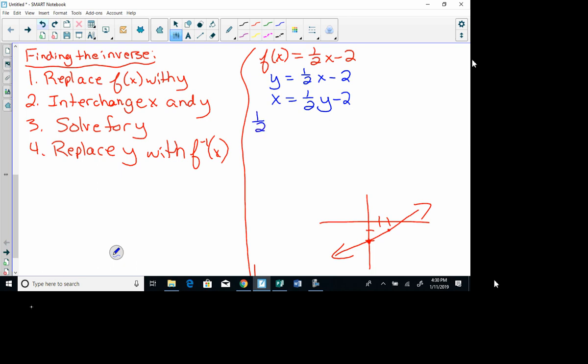Then, I solve for y. I like y on the other side. So, I'm just going to switch sides here. So, I'm going to add 2. 1/2 y = x + 2. To get rid of 1/2, I have to multiply by 2. So, on this side, I have to take the whole thing times 2. So, that gives me y = 2x + 4. Then, my last step says replace y with f inverse of x.